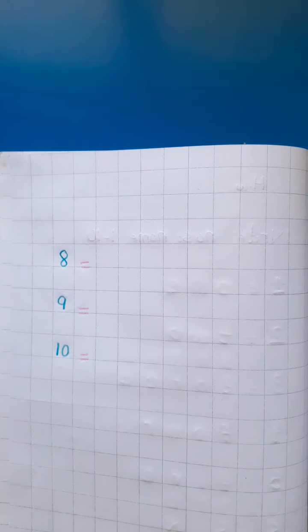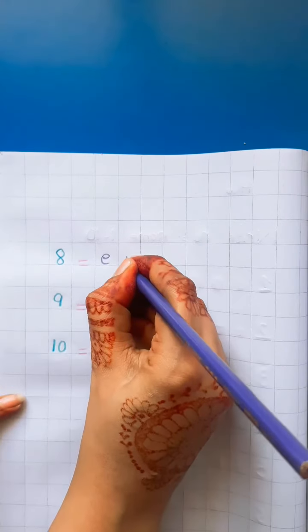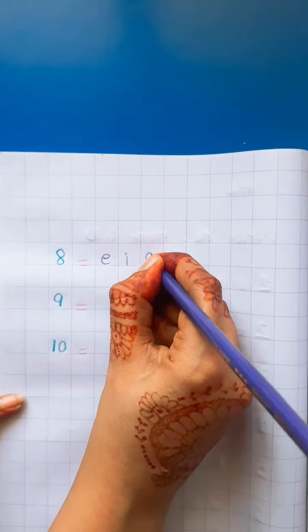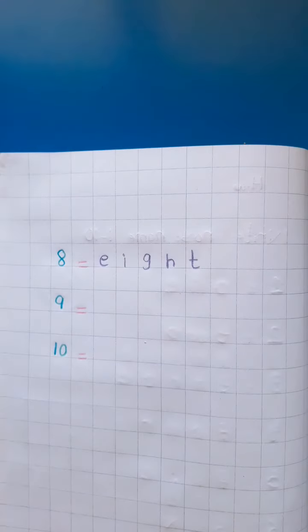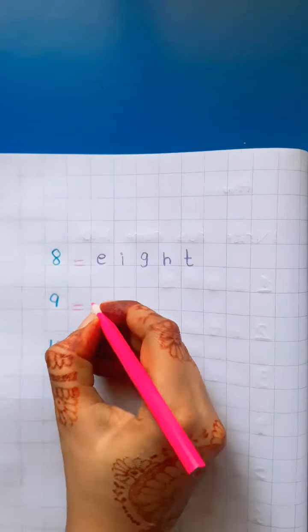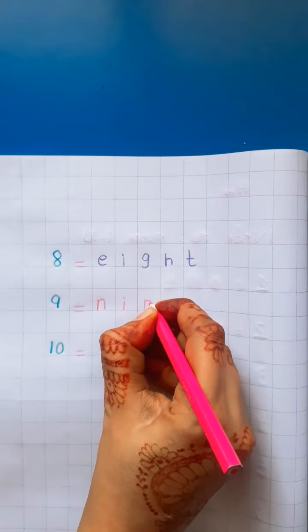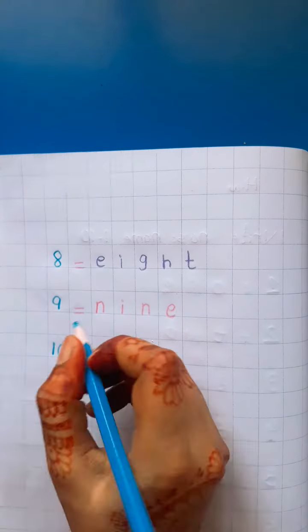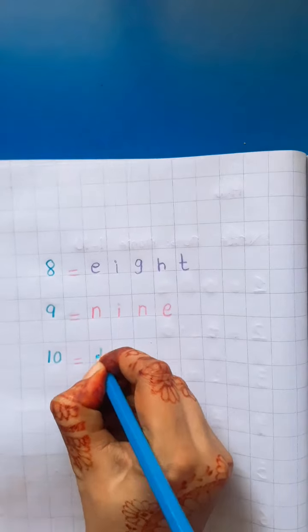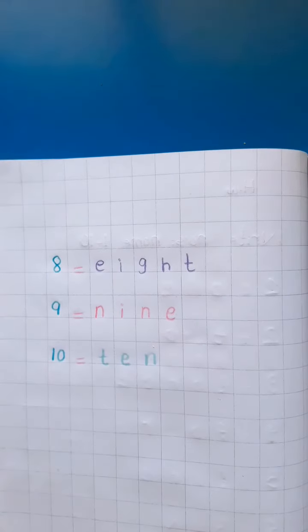What comes after seven? Eight. What's the spell of eight? E-I-G-H-T. Eight. E-I-G-H-T. Eight. N-I-N-E. Nine. N-I-N-E. Nine. T-E-N. Ten. T-E-N. Ten.